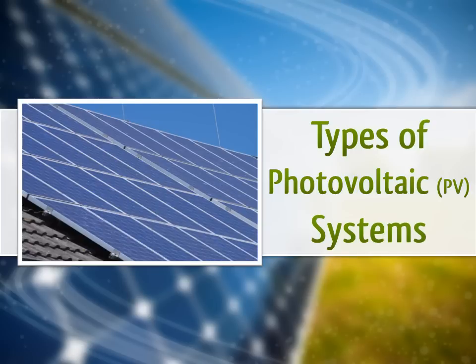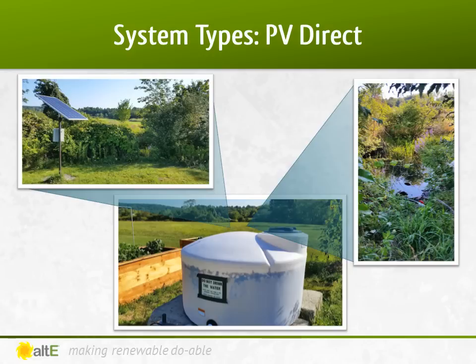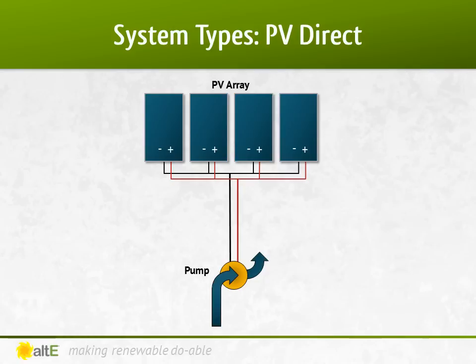Let's start with the different types of photovoltaic or PV systems. PV direct systems are the most basic type. The most common one is solar water pumping for remote irrigation, watering livestock, or pumping from a well or stream to a cistern. A PV direct system can consist of as few as two components: the solar panel and the device being powered, like a pump or fan. There is often a controller or a linear current booster between the two and some fuses and breakers, but not much more than that.